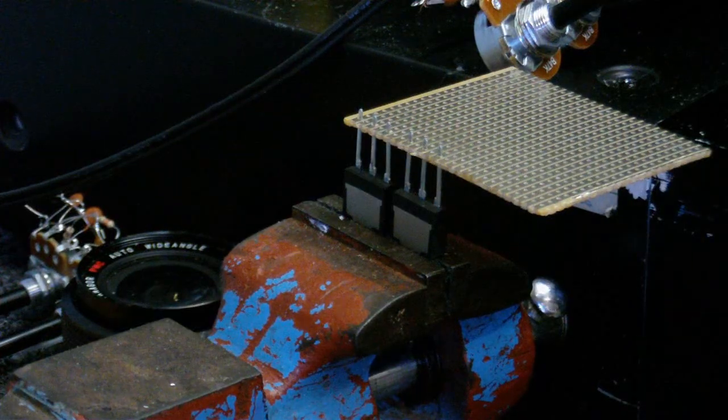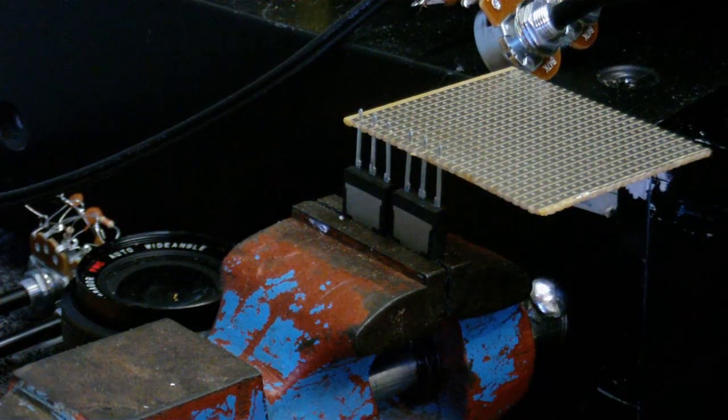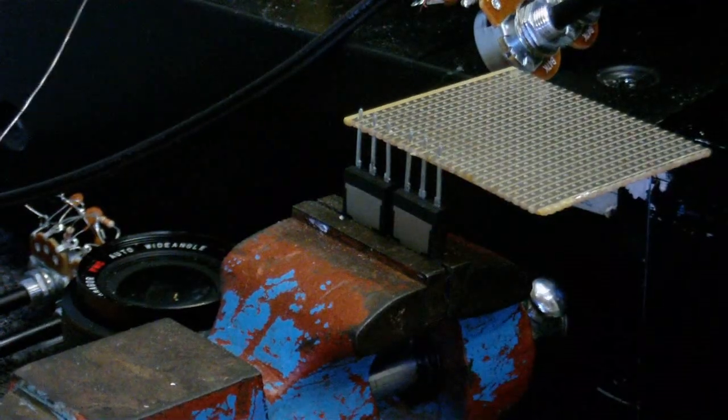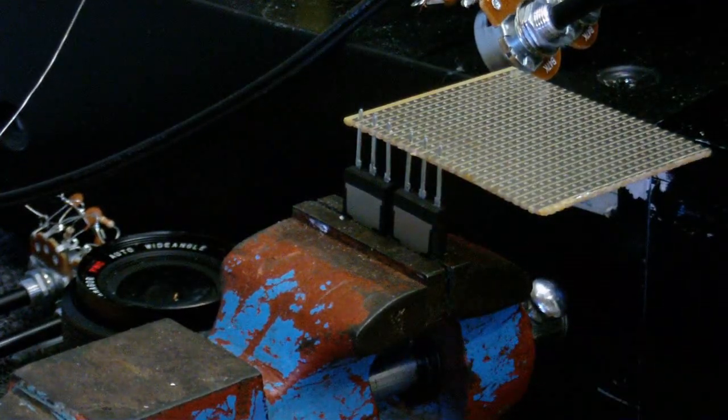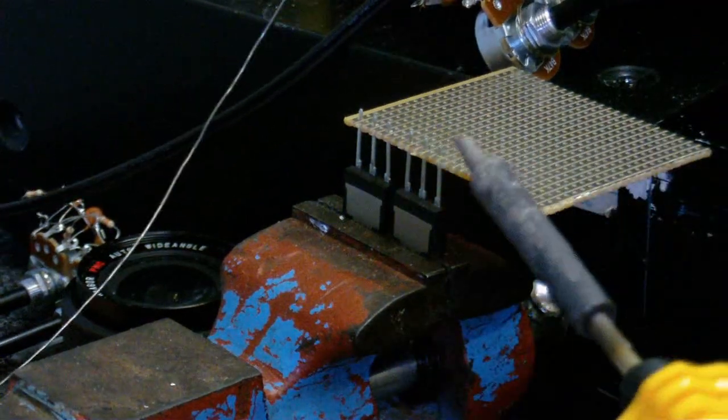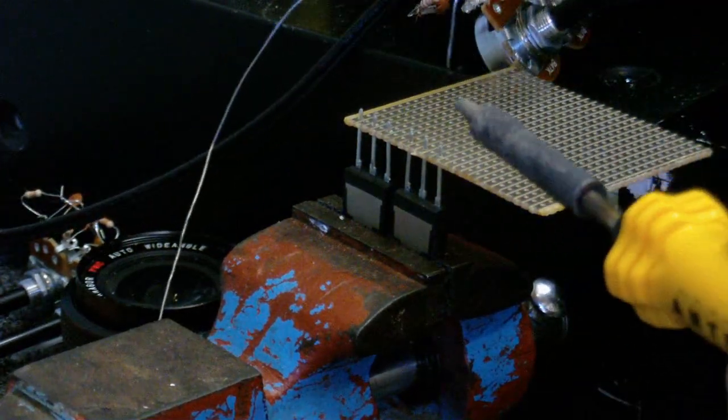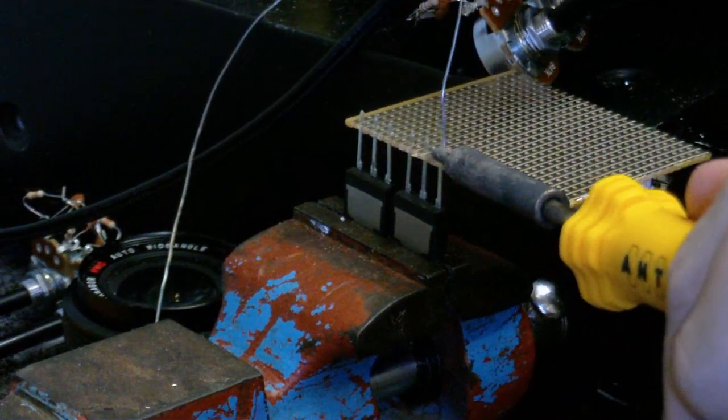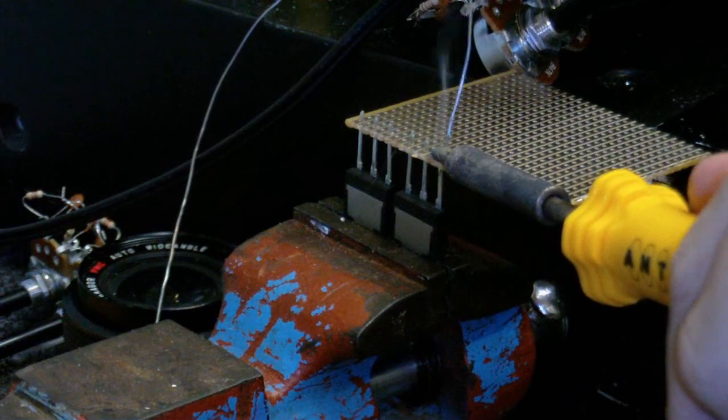I'm about to start soldering the output transistors in now. This is the TIP-2955 and the TIP-3055 I talked about earlier, and you might notice that I've put them in my vice. This is a very good method to use when you're soldering in transistors, because you don't want them to get damaged by the heat. The vice acts as a kind of a heat sink.